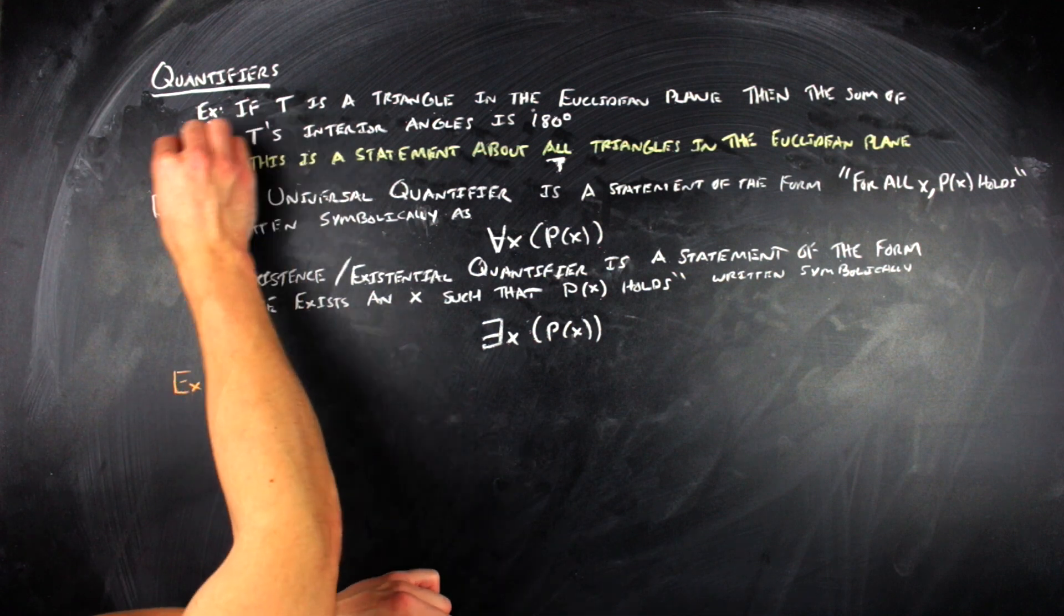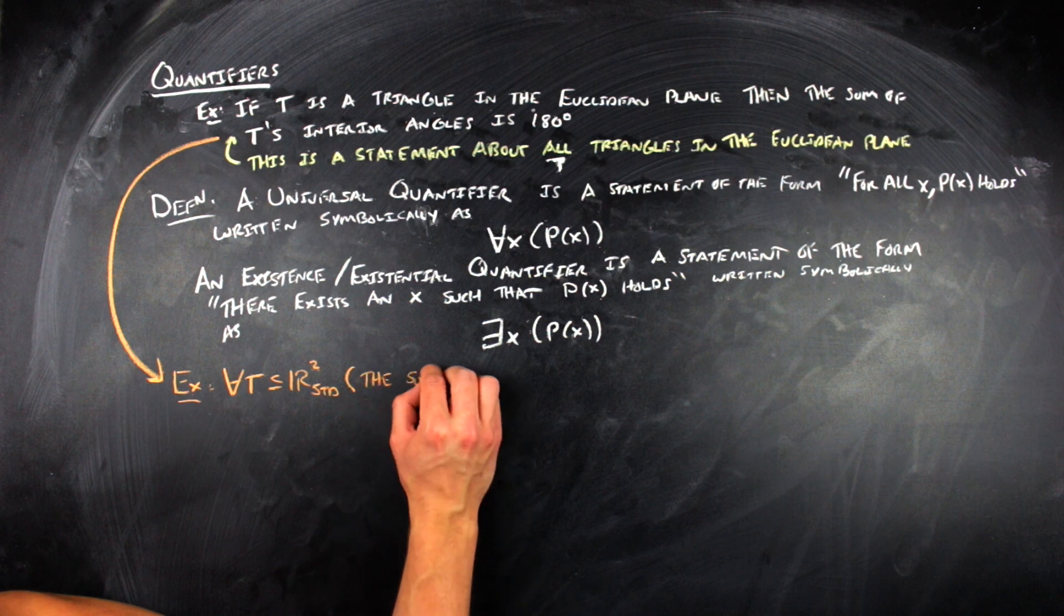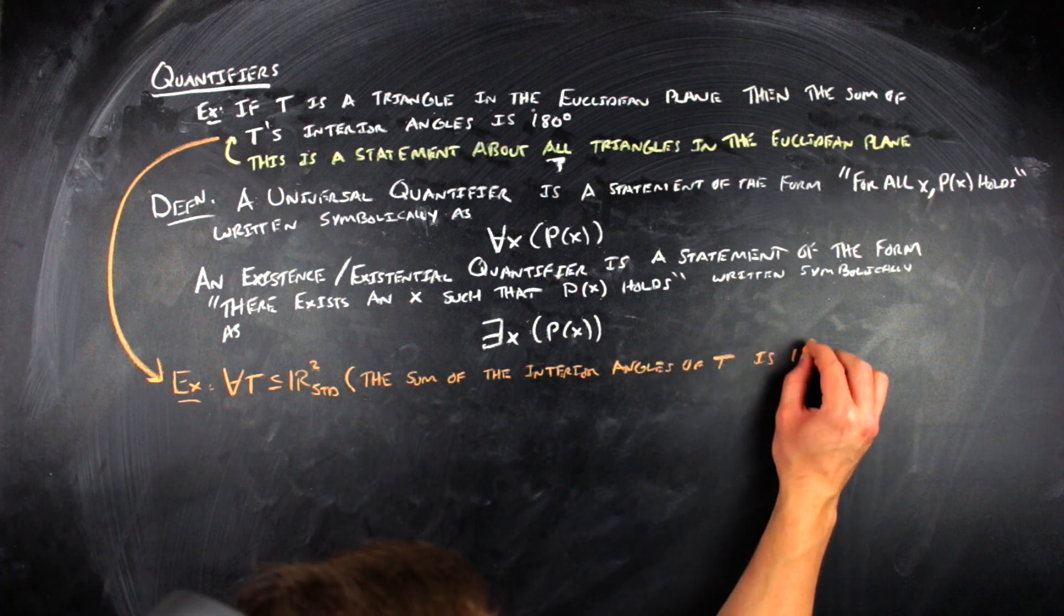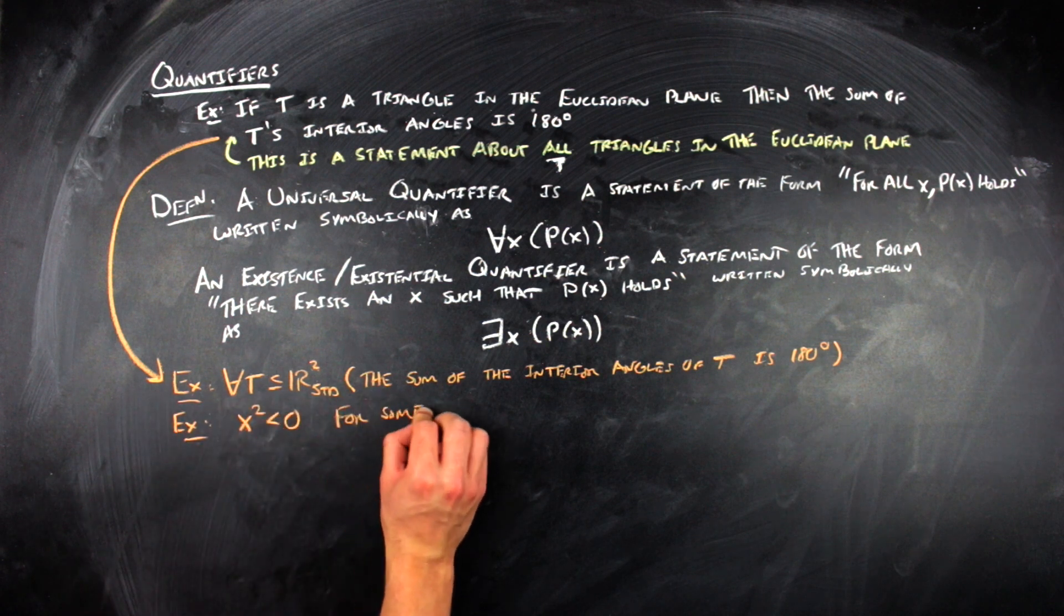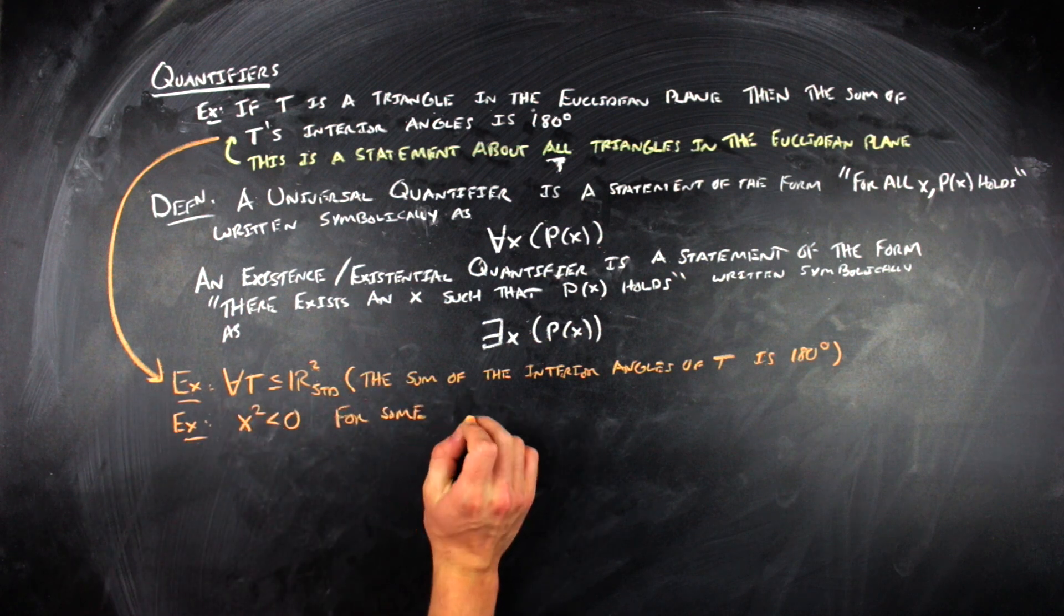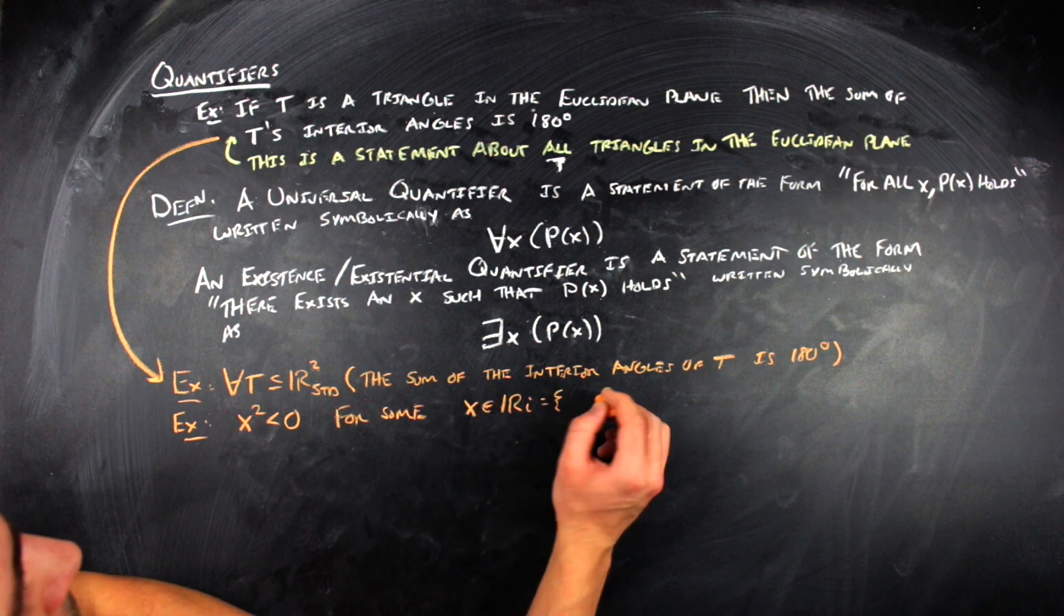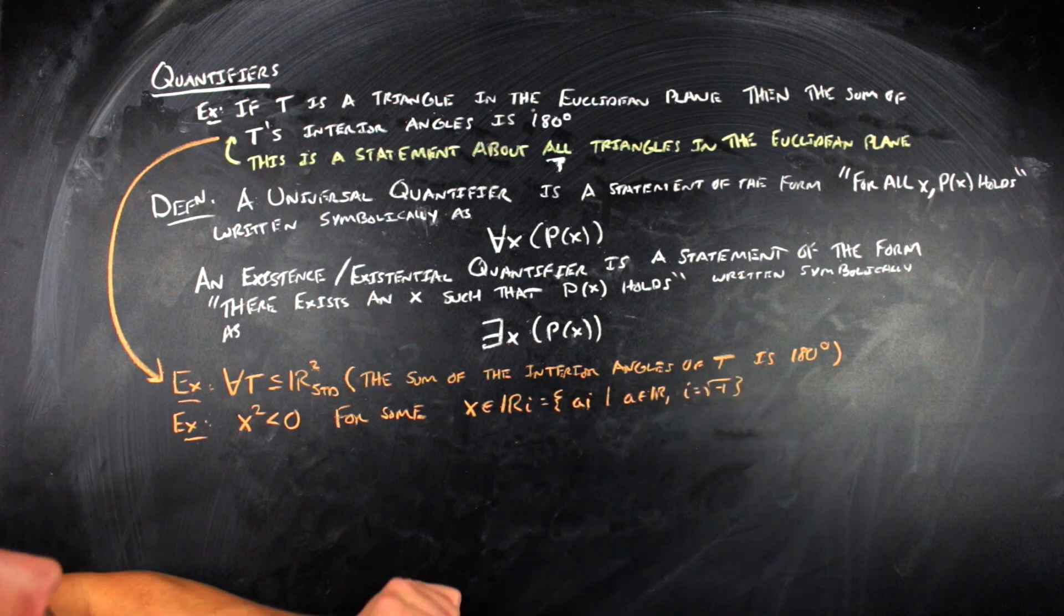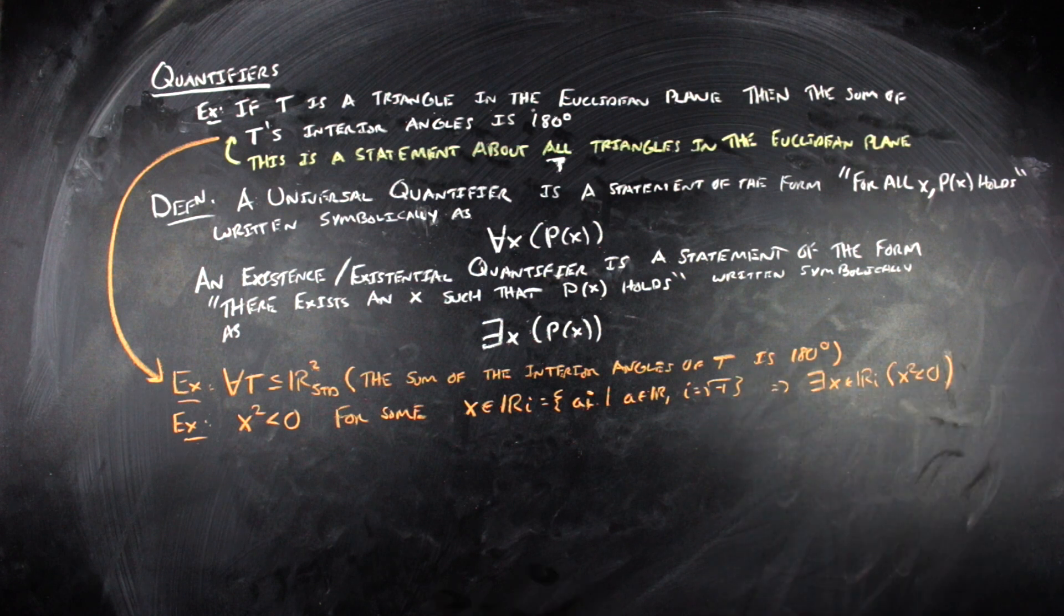So, for example, we can take that triangle statement and convert it into a universal quantified statement, in that for all T in the Euclidean plane, the property holds. Alternatively, we can look at, for some existence thing, we can say that x squared is less than x for some x within r times i, where r times i is just a set of all real numbers times the square root of negative 1. And we can rewrite that statement as there exists an x within ri such that x squared is less than 0.